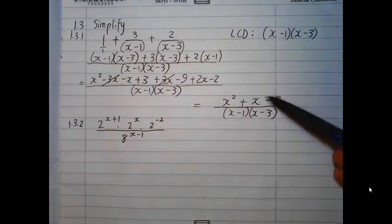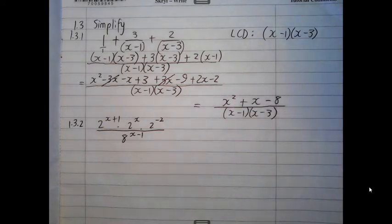3 minus 9 is negative 6, minus another 2 is negative 8. So, there's our final answer. Possibly, you could consider quadratic trinomial over there, but it would not work. So, you would just remain over there as your final, final answer.